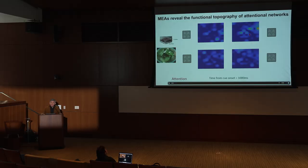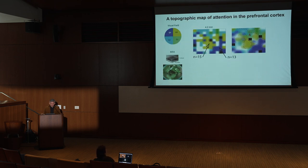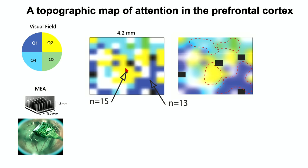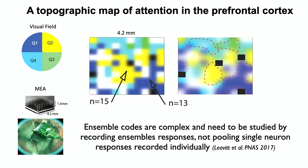We can do image processing to identify activity maps: when the animal attends to different quadrants, different spatial regions of the array activate — color-coded by quadrant. I can decode where the animal is attending, and I could do that in a human too. Ensemble codes are complex and must be studied by recording ensemble responses, not pulling single-neuron responses individually.